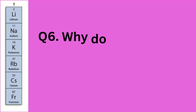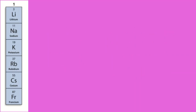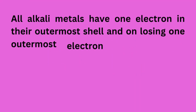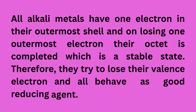Question 6: Why do group 1A metals show strong reducing properties? All alkali metals have one electron in their outermost shell, and on losing that one outermost electron their octet is completed, which is a stable state. Therefore, they try to lose their valence electron and all behave as good reducing agents.